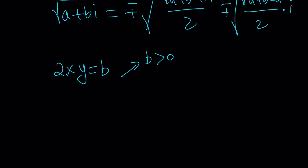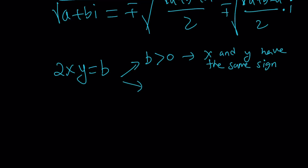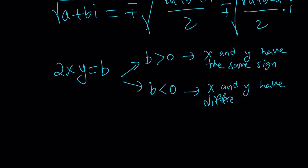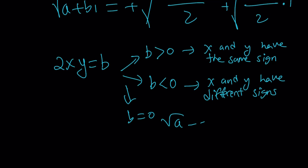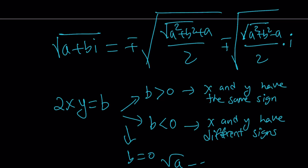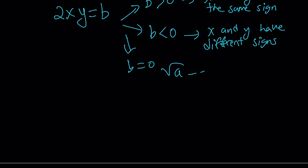If b is positive, x and y have the same sign, so you use plus-plus or minus-minus. If you find one complex square root, the other is just its negative — which explains the plus-minus situation. If b is negative, you use plus-minus or minus-plus. And if b equals zero, you just get the square root of a, which is straightforward. Now let's apply this to a numerical example.